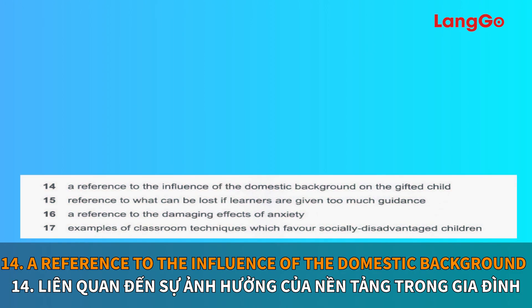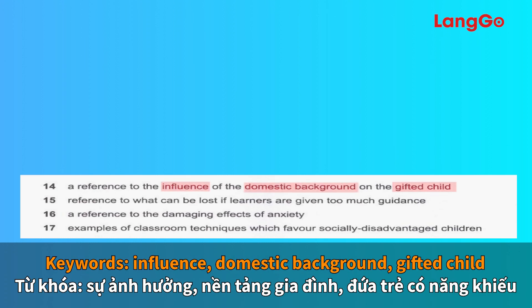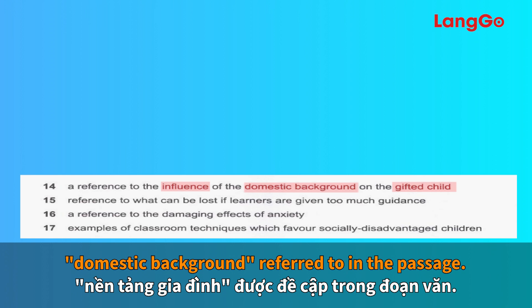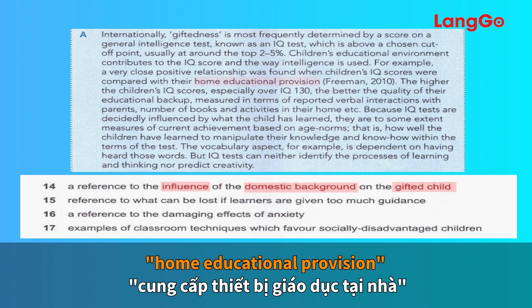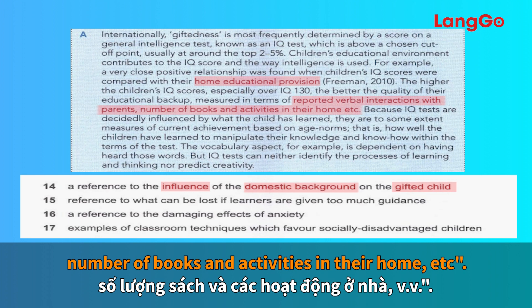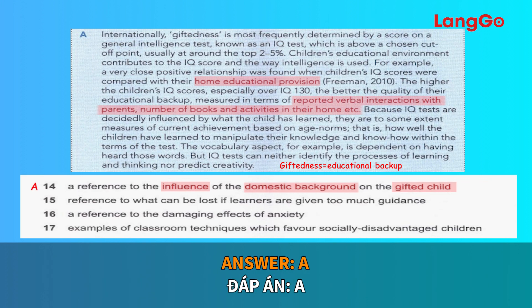Question number 14: a reference to the influence of the domestic background on the gifted child. Our keywords here are influence, domestic background, and gifted child. For this question we need to find out about the domestic background referred to in the passage. Coming to paragraph A, the author states the necessity of home educational provision and reported verbal interactions with parents, number of books and activities in their home, etc. Giftedness is similar to educational backup at home, so our answer is A.